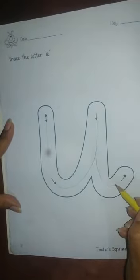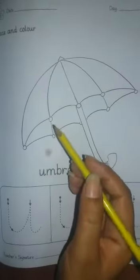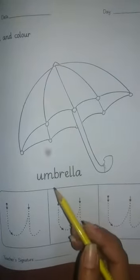Now come to the next page. Write down the date over here, and over here, trace and color. So students, here first we trace and then we color our picture. So students, here we see one umbrella, okay?